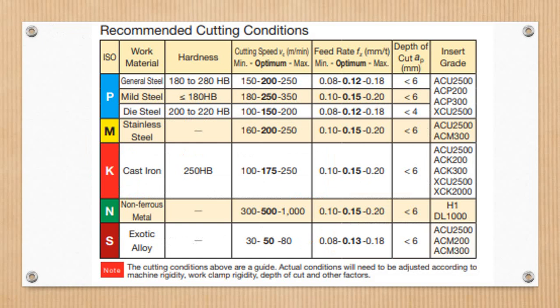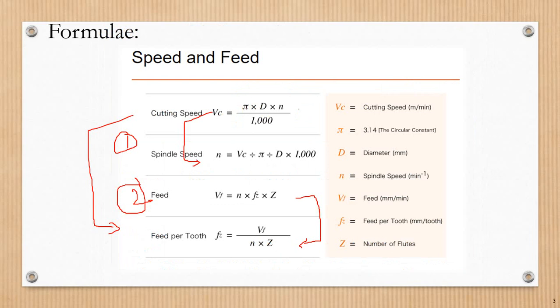Here we have P and steels. The catalog mentions the cutting speed and feed rate. For this material, the cutting speed ranges from 150 to 250. We'll use 250 for our calculation. So we have 250 divided by pi value, which is 3.14, divided by D. The cutting tool diameter is suppose 20mm, into 1000. This gives us the spindle speed.